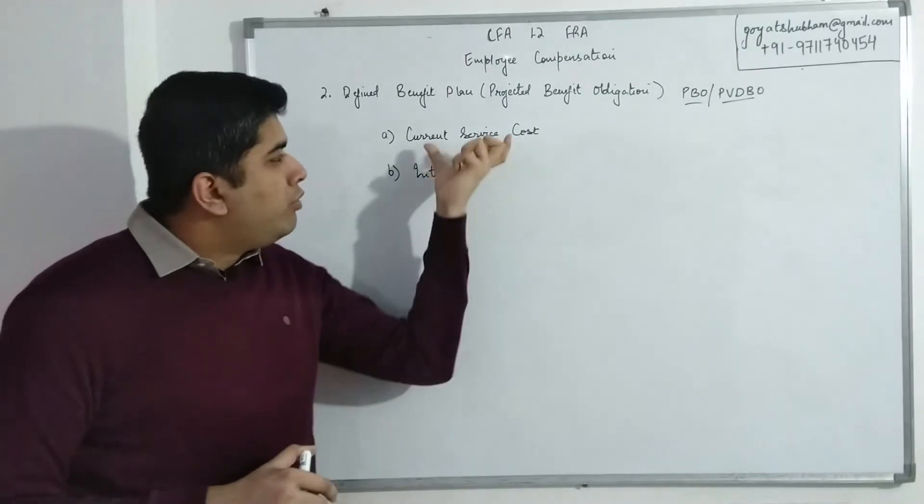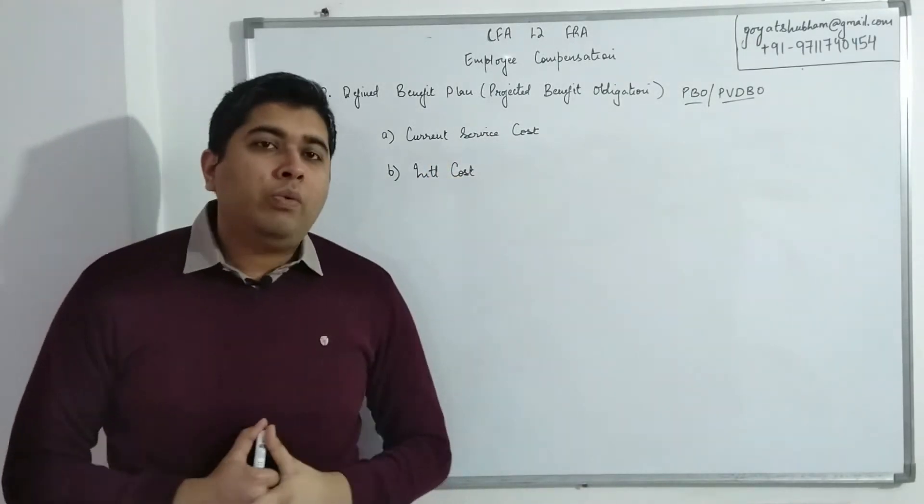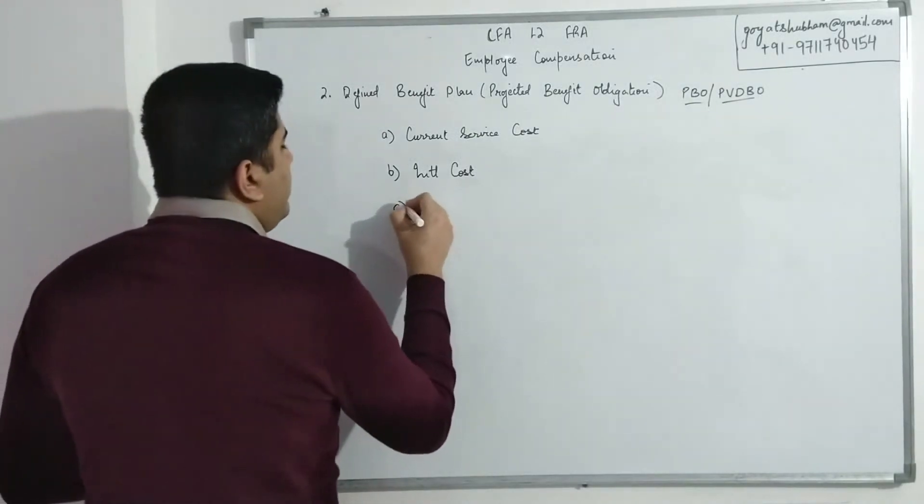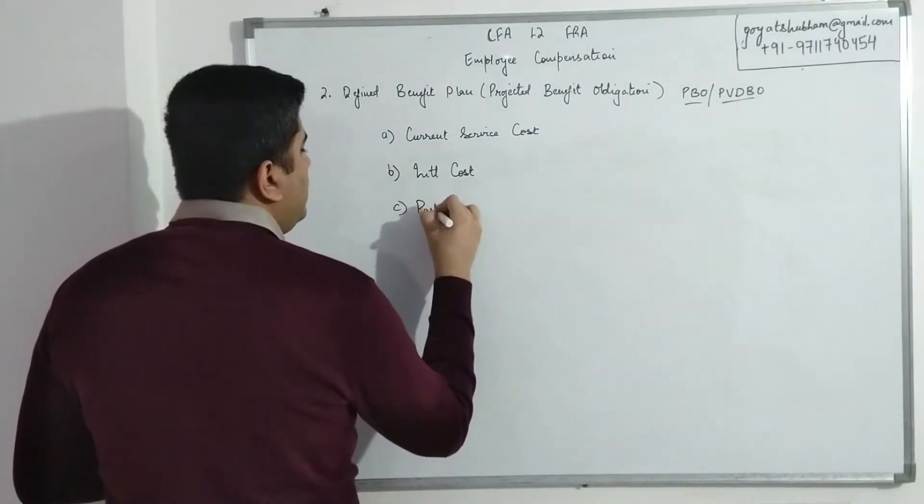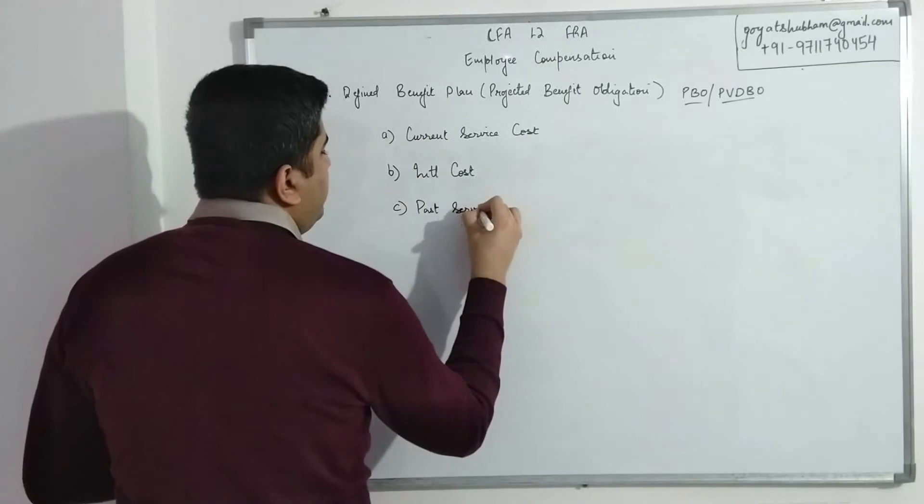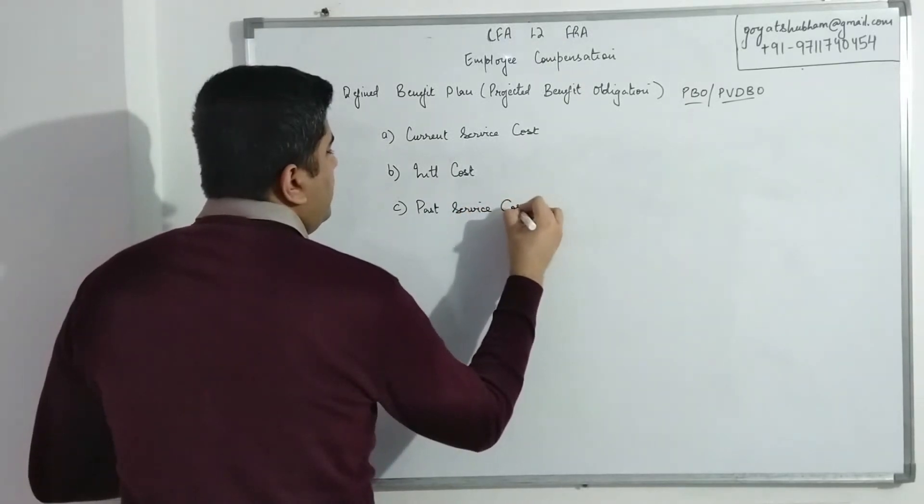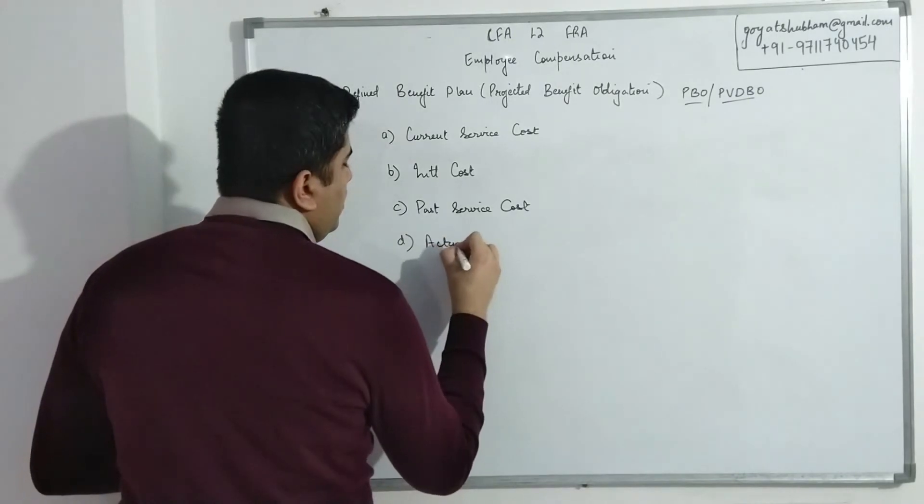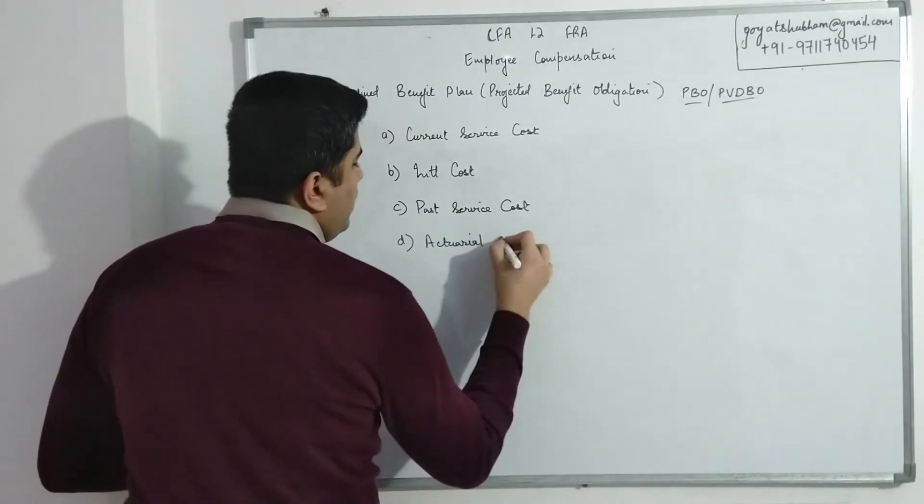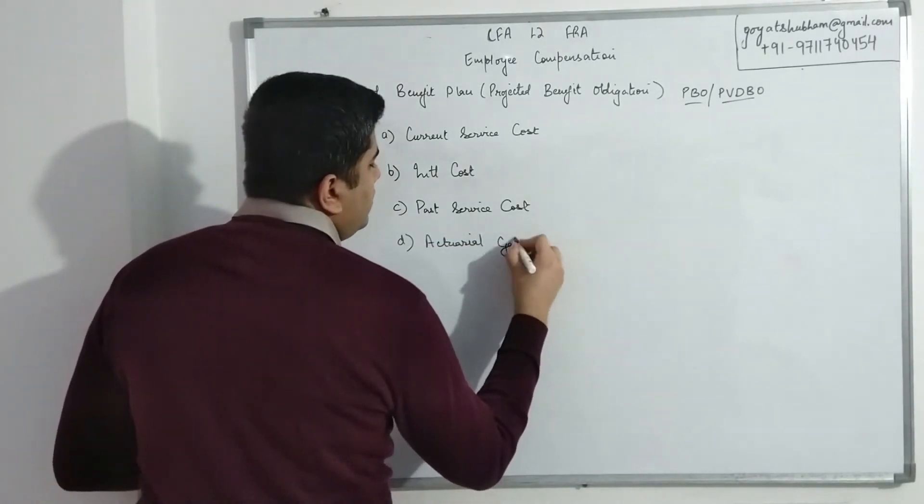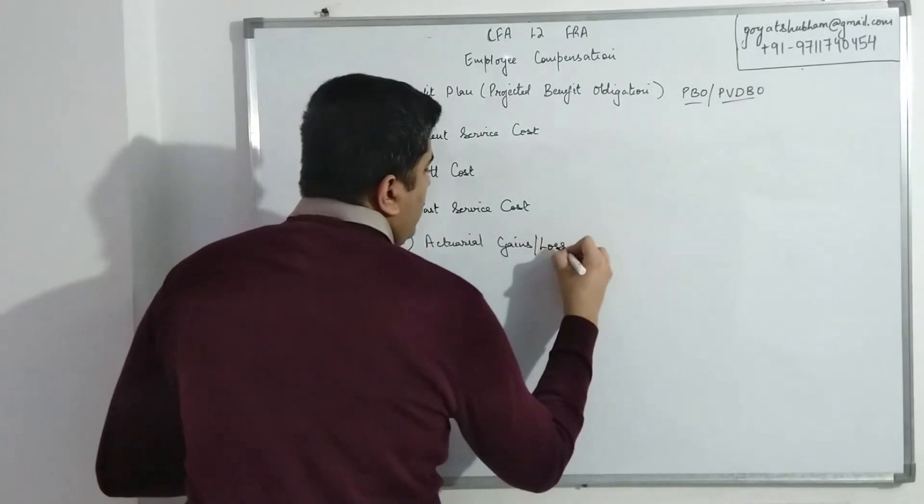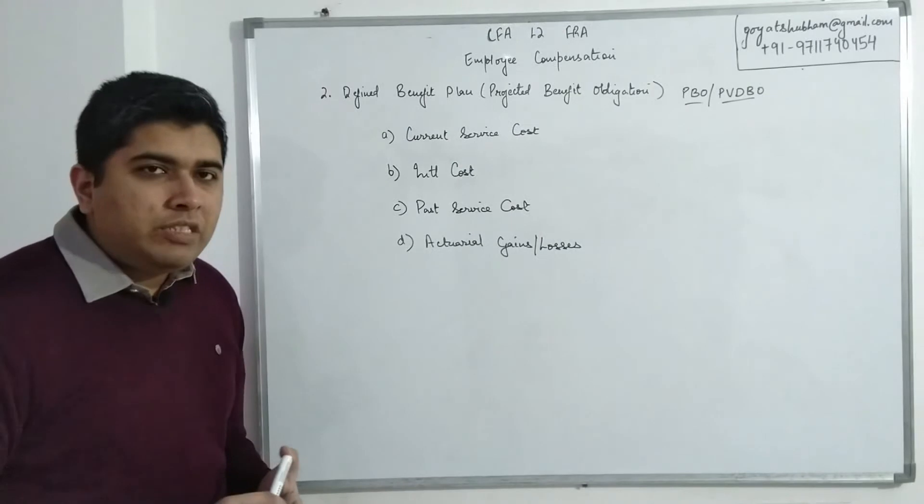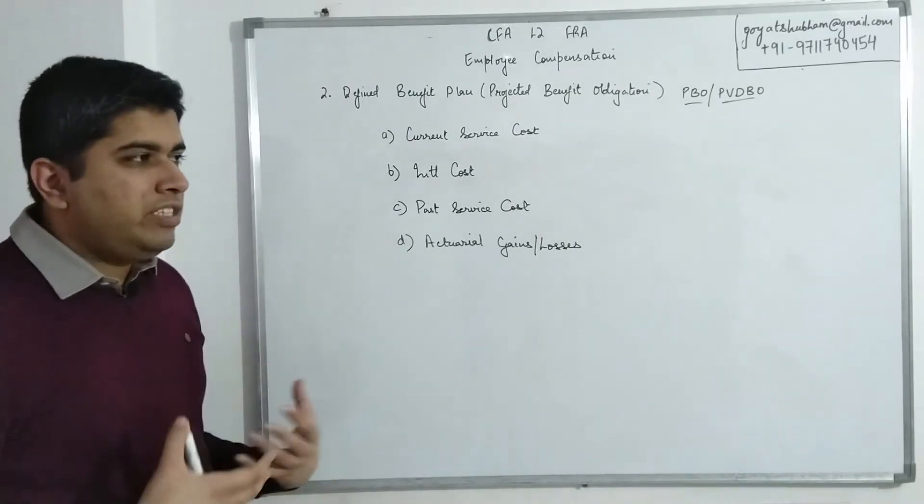So for that, whatever the increase in obligation is due to passage of time, due to time value of money not being as significant as it was one year ago, that is known as Interest Cost. Again, both of these components would make more sense with an example. Now aside from this, you have Past Service Cost and you have Actuarial Gains and Losses.